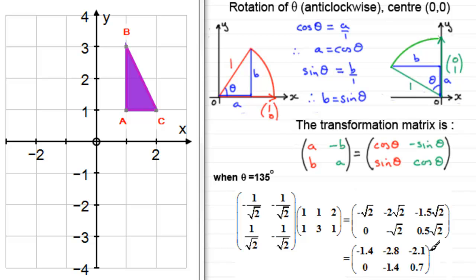So we'll rotate this triangle 135 degrees—that's 45, 90 degrees, and there's 135—and here are the image points A', B', and C'. They're the images given by these vectors: -1.4, 0 is A'; -2.8, -1.4 is B'; and -2.1, 0.7 is C'.